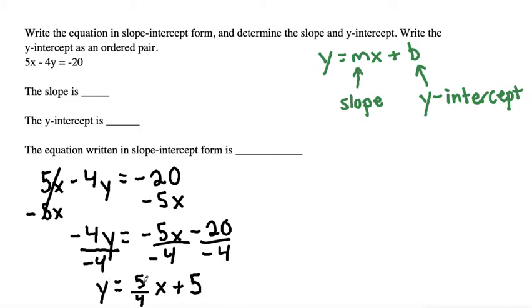So let's compare what we have to our slope-intercept form. Our y is by itself. The x has a number multiplied by it, and we have a constant term as well. So we have it in our slope-intercept form. We can write that y equals 5 over 4x plus 5. That is our slope-intercept form.